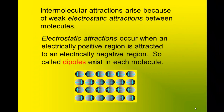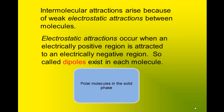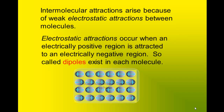Electrostatic attractions occur when an electrically positive region is attracted to an electrically negative region. A so-called dipole exists in each molecule. This cartoon can be an example of a speck of solid — each oval represents a molecule. In each molecule there exists a dipole: a region of positive and a region of negative. Notice how the molecules are oriented in the speck of solid. The positive end of one molecule is attracted to or lined up with the negative end of another molecule, and this continues throughout the speck of solid.